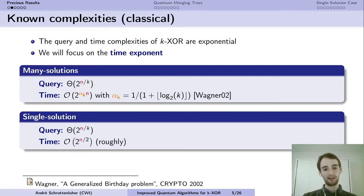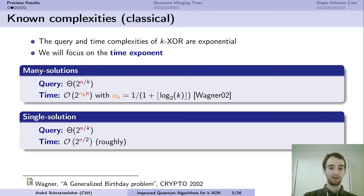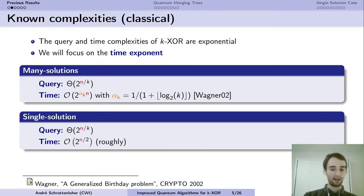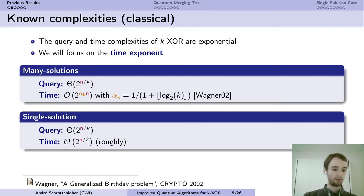The time complexity is much higher than that. In the many-solution case, the base algorithm is Wagner's from Crypto 2002, and the time exponent is 1/(1 + log₂ k). In the single solution case, the problem becomes even harder, and the time is basically 2^(n/2) regardless of the value of k, depending slightly on its parity.